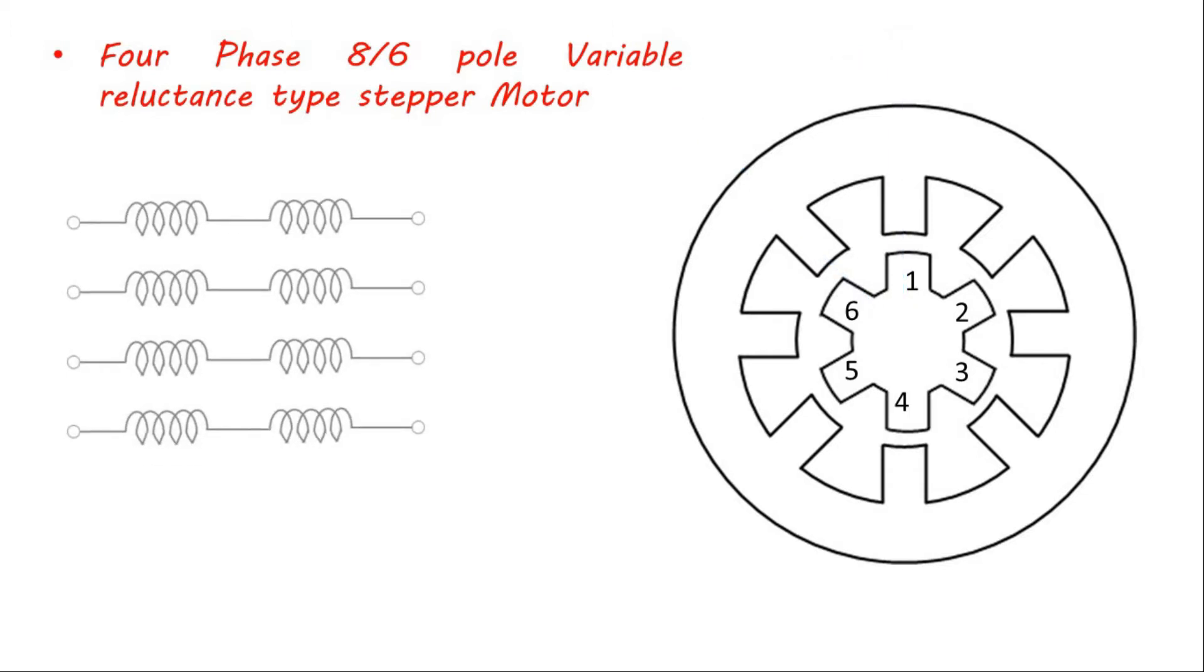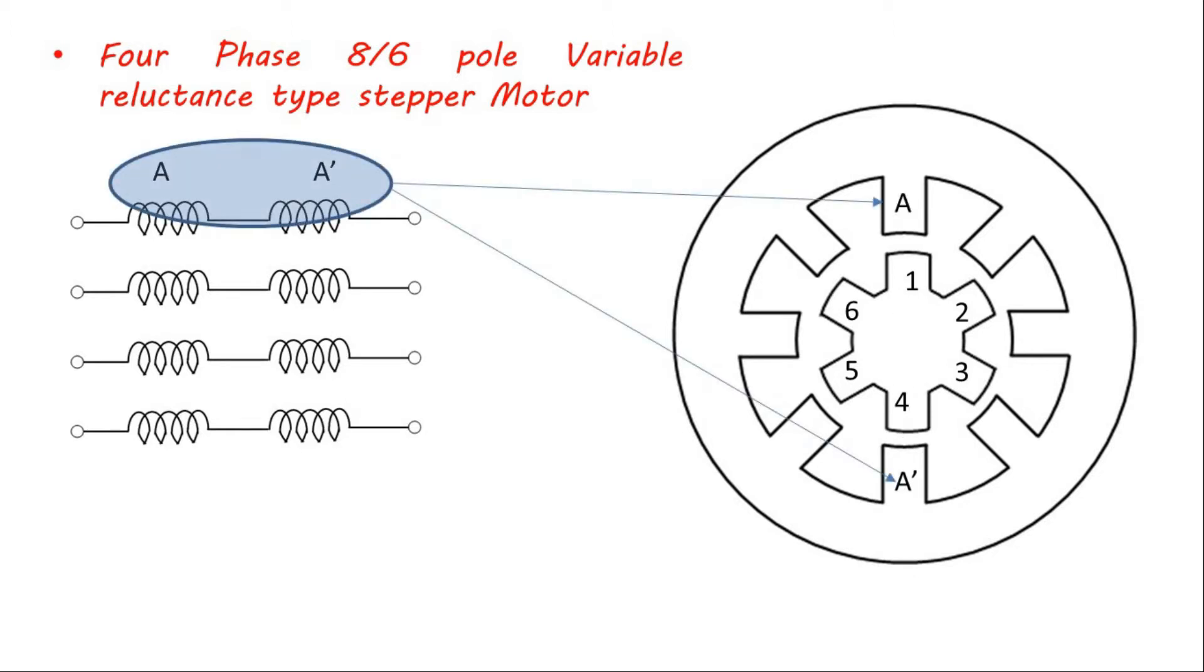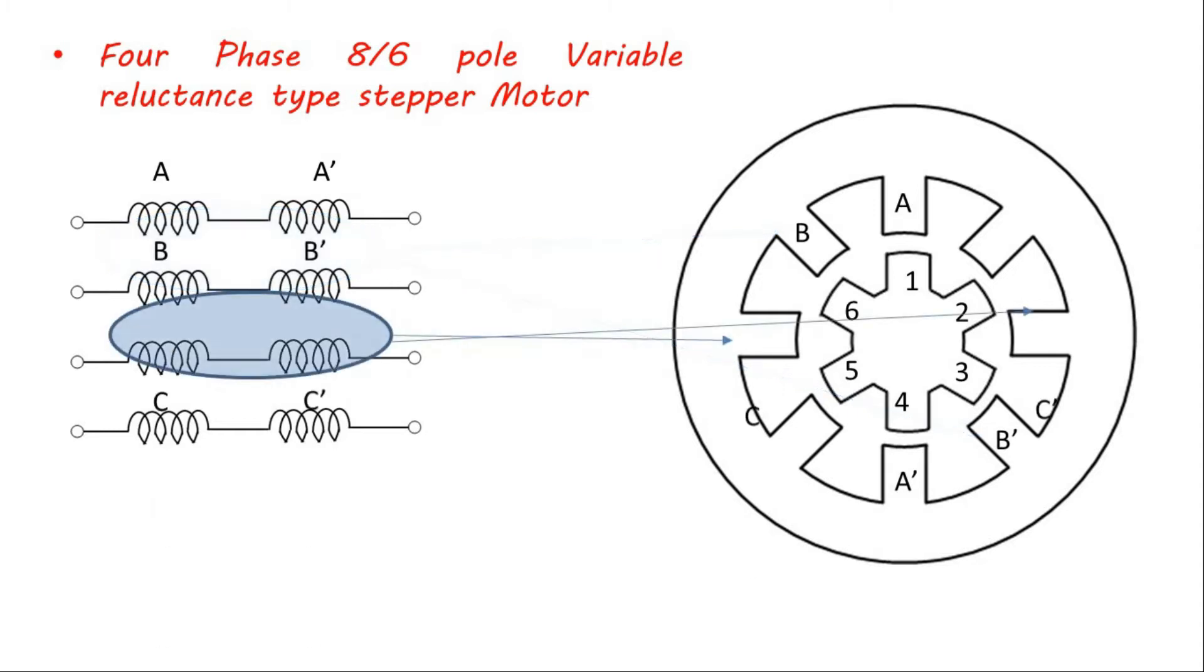The two sets of concentric windings in each pair are connected in series. For example, winding A and winding A prime are connected in series. This pair of winding is referred as phase A. The case for other phases is also similar to this.